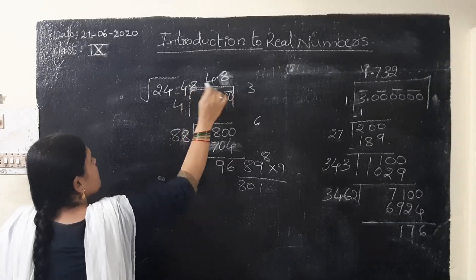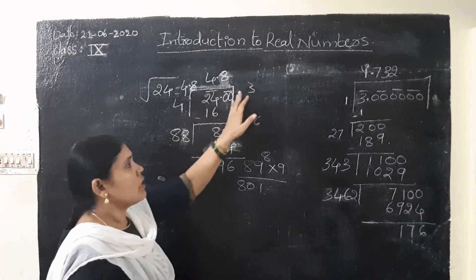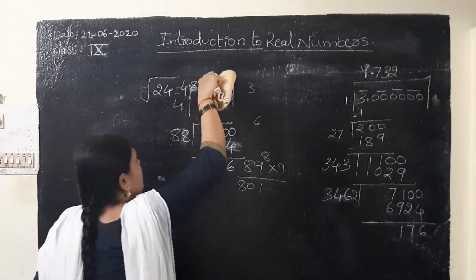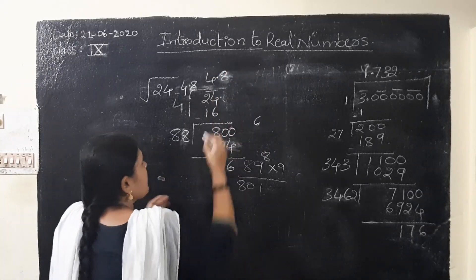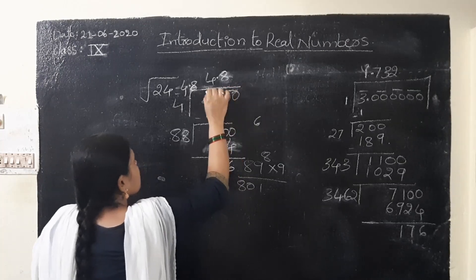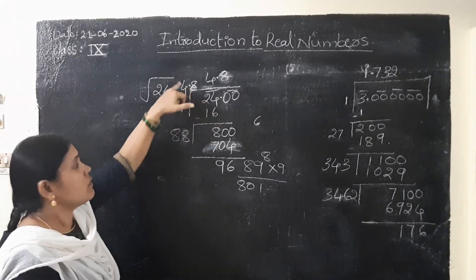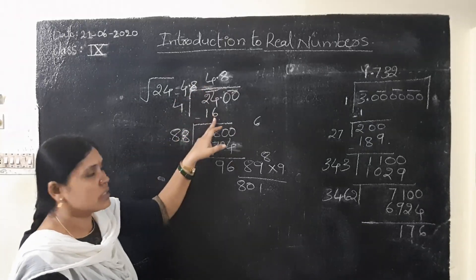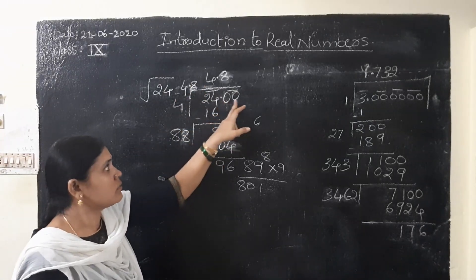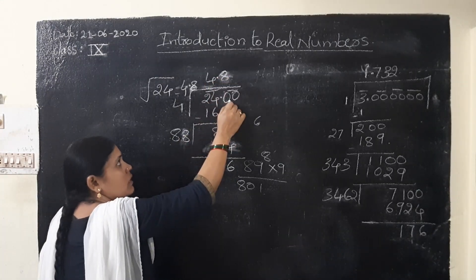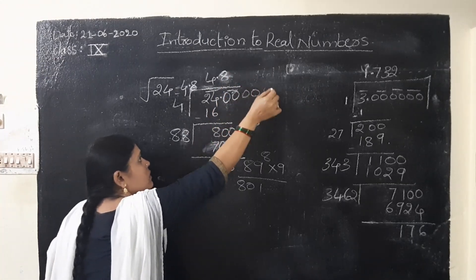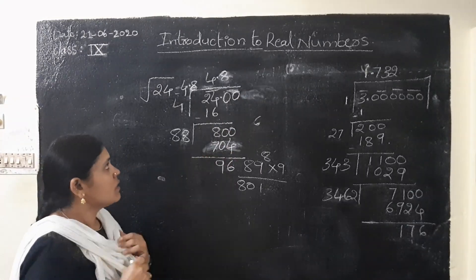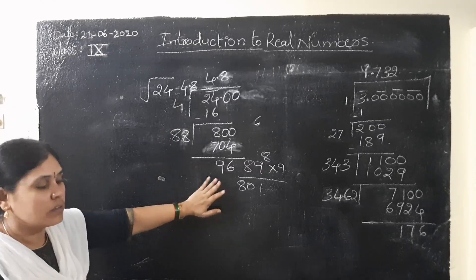Up to one decimal only. If we want up to two decimals or three decimals, depending on the question, we have to take the zeros after the decimal point. So here we can find out the square root of any number in this method. First, we should understand 24 lies between which squares: 4 square and 5 square. First take 4 — less than 5 square — so take 4. 4 for 16. 24 minus 16 is 8. Take down those two zeros. So if we want one decimal place, take two zeros; two decimal places, take four zeros; three decimal places, another two zeros. Depending on the number of decimal places, we will take the zeros.